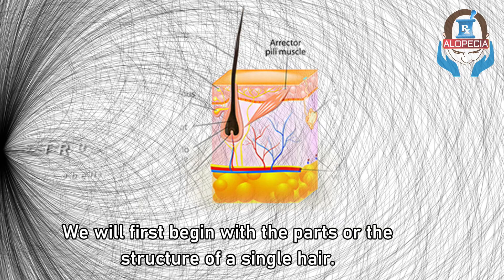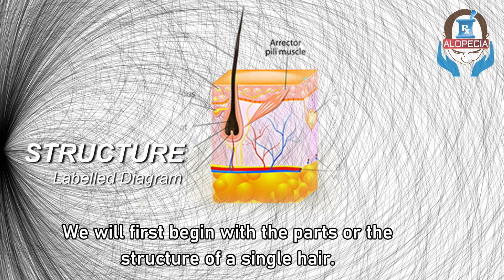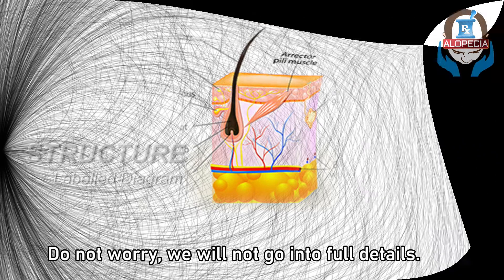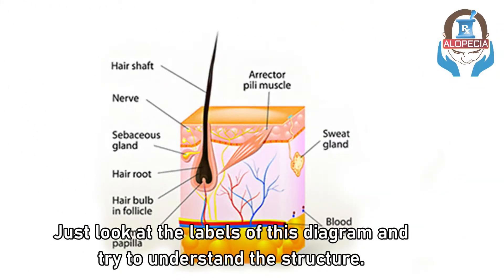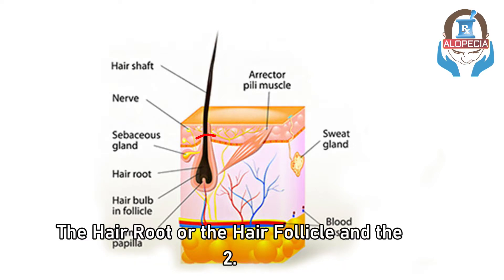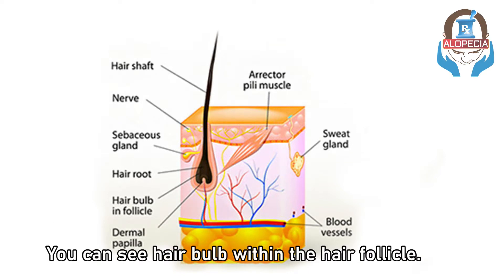We will first begin with the parts or the structure of a single hair. We will not go into full details — just look at the labels of the diagram and try to understand the structure. It is made up of two parts: first, the hair root or the hair follicle, and the hair shaft, which is what we see outside the skin.